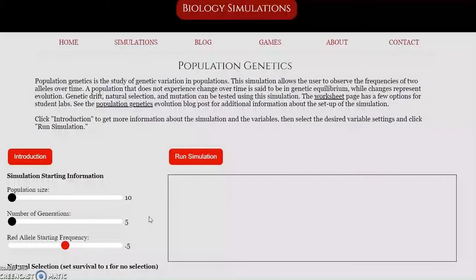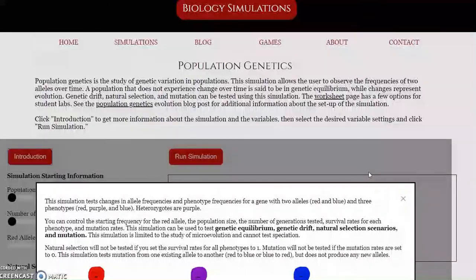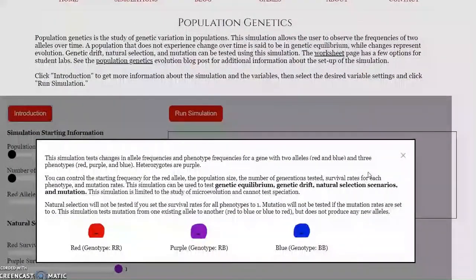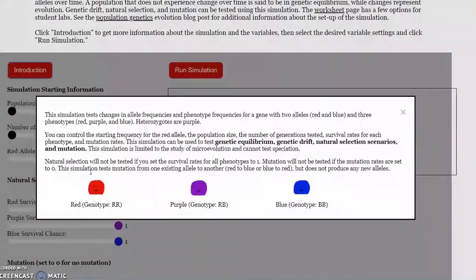Let's run a trial on the simulation and get some data to work with. For the population genetic simulation, we have a population of fictional organisms. The gene being studied here is for color. There are two alleles, red and blue, and there are three possible phenotypes. Red and blue are the homozygotes, and the heterozygotes are purple.